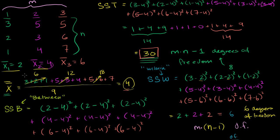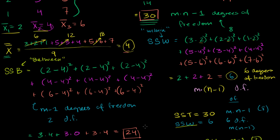In the last couple of videos, we figured out the total variation in these nine data points, and we got that to be 30 — that's our total sum of squares. We asked ourselves how much of that variation is due to variation within each of these groups versus variation between the groups. The sum of squares within was 6, and the balance — the sum of squares between — was 24.